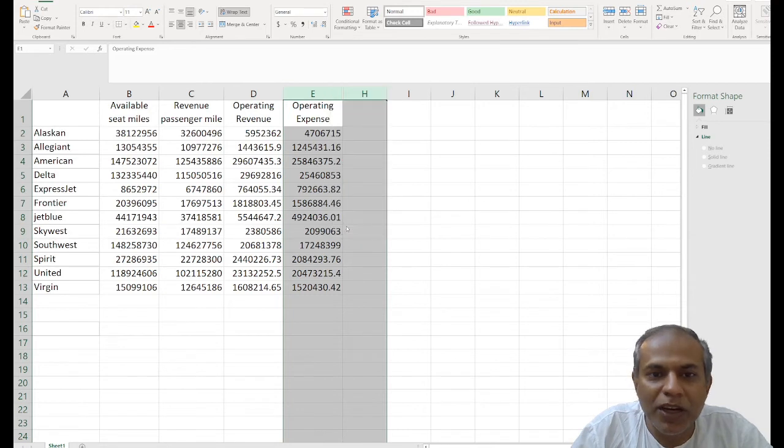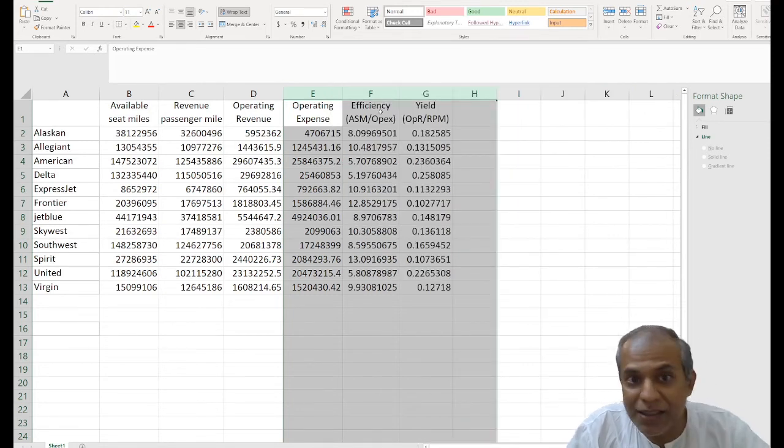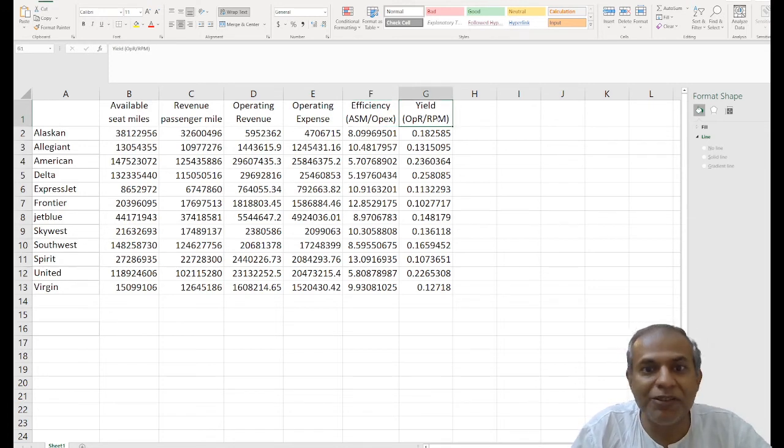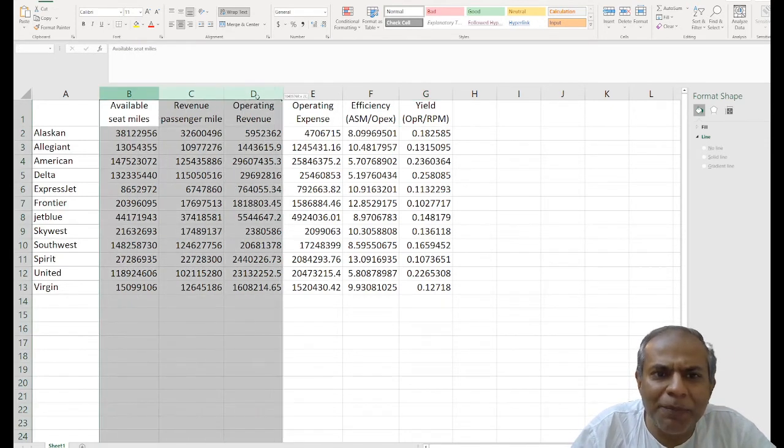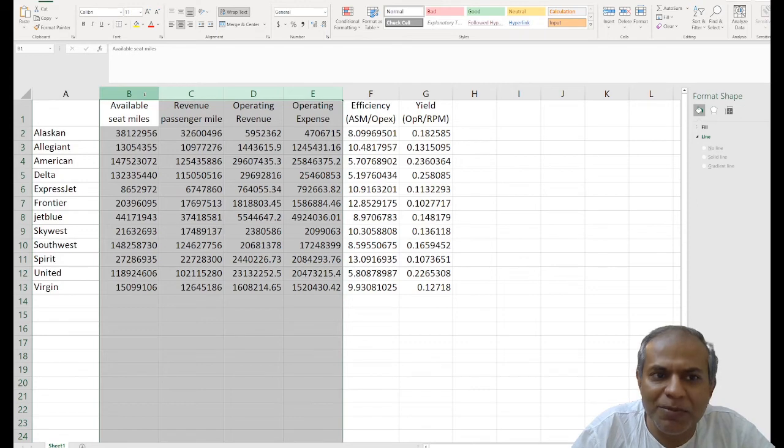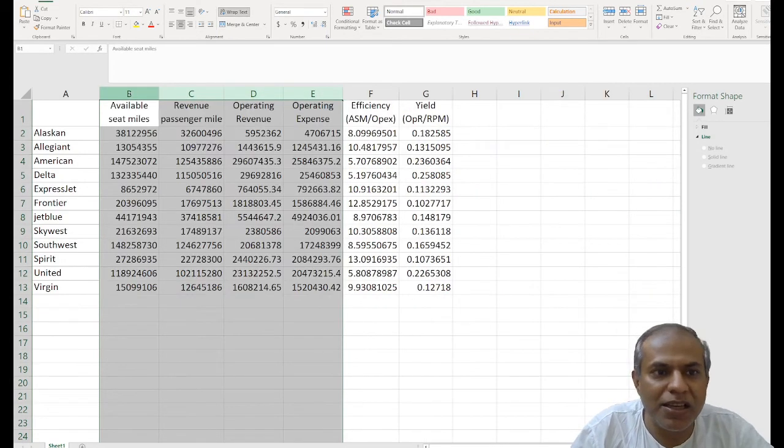I calculate my operations efficiency and yield. These are the two things we talked about previously. Available seat mile upon cost—the cost is operating expense—and yield is operating revenue upon revenue passenger mile, which is the number of customers that we talked about. So let's try to map it and see why these metrics make sense.